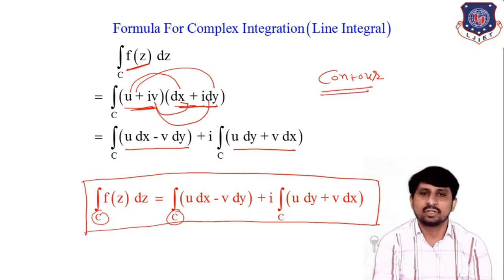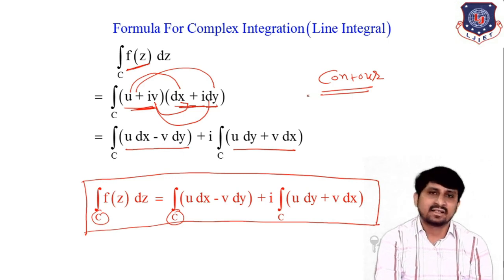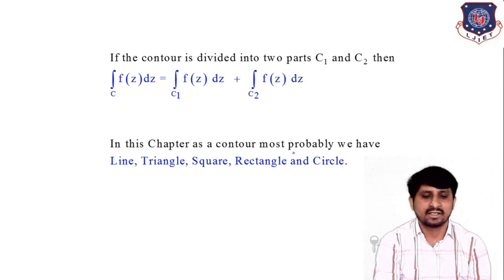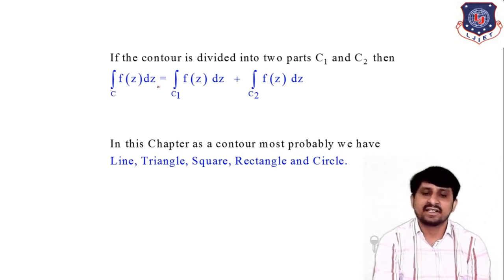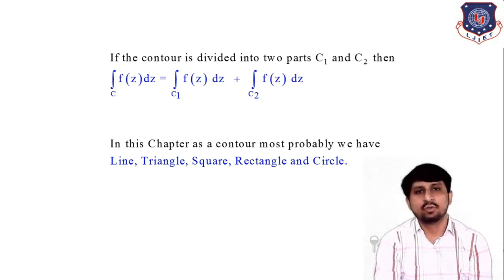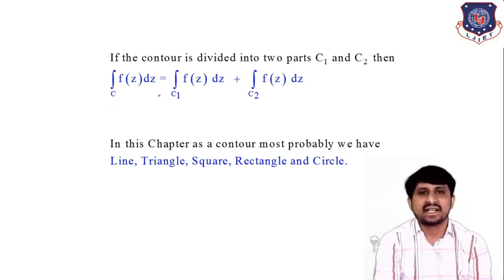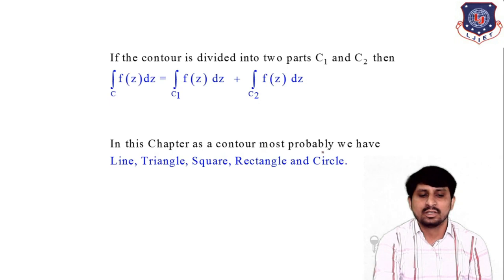If your contour is divided into two parts c1 and c2, then the integration of f(z) over contour C equals the integration of f(z) over c1 plus the integration of f(z) over c2 dz. In this chapter, as a contour, we most probably have a line, triangle, square, rectangle, or circle.